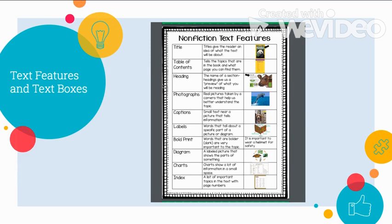Headings are often located under the title and are a sentence or two that give your reader a preview of what they will be learning. This is a common text feature in feature articles that have more than one paragraph. Photographs are real pictures that the author adds to give more information on the topic. They help make feature articles more compelling and help the reader picture what the author wants you to know. Captions are located underneath or near the photo and help explain to the reader what the photograph is, helping the reader better understand what they are looking at.